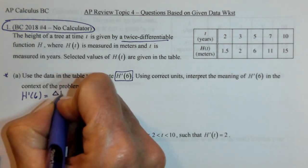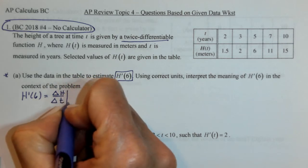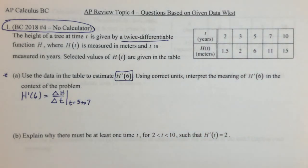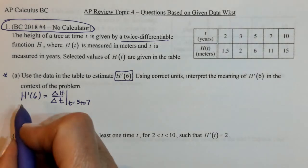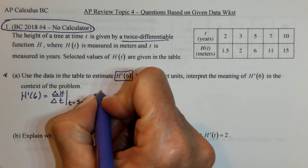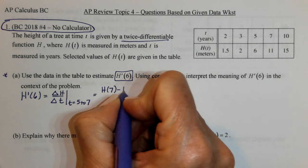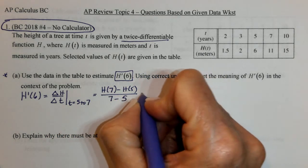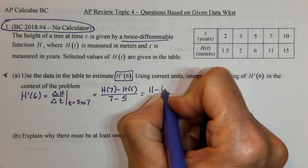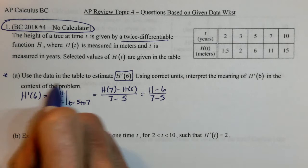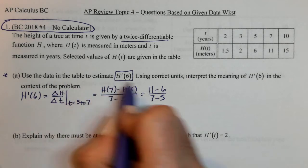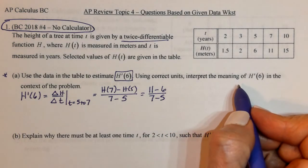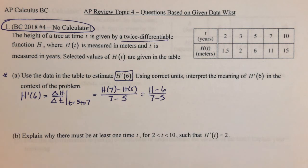Change in height over change in time from time 5 to 7: H of 7 minus H of 5 over 7 minus 5, which is 11 minus 6 over 2. They didn't say to give units for the calculation itself, but they did ask for units in the interpretation. The units would be meters divided by years — meters per year.